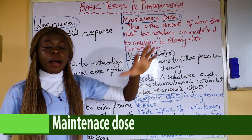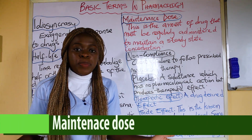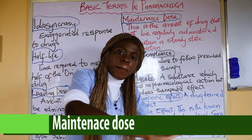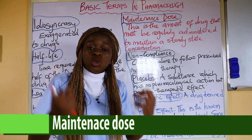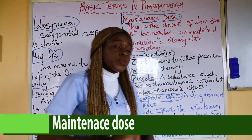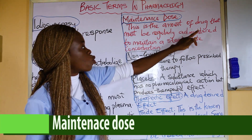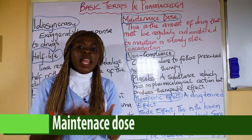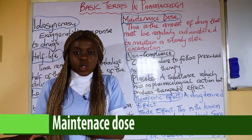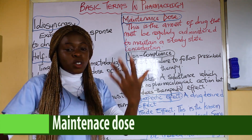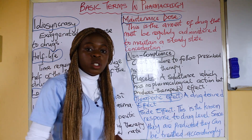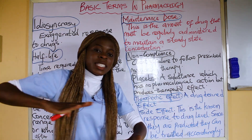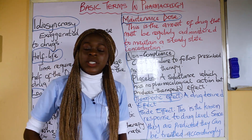The next term is Maintenance Dose. Remember, loading dose is what you give rapidly and quickly to bring plasma concentration to its therapeutic level. Maintenance dose is what helps you maintain that therapeutic level after loading. It is the amount of drugs that must be regularly administered to maintain a steady-state concentration. For example, after giving 50% dextrose, you might then give 5% dextrose at 8 drops per minute — that maintains the therapeutic level. Loading dose brings concentration up quickly, while maintenance dose keeps it there so it doesn't drop further.